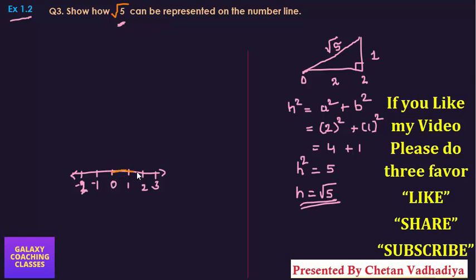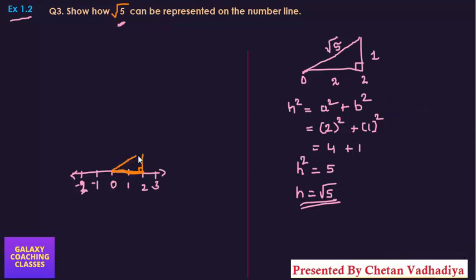You can see this will be 2. Now this is perpendicular, 1 centimeter. So here also perpendicular 1 centimeter. Now you will get this length as √5.